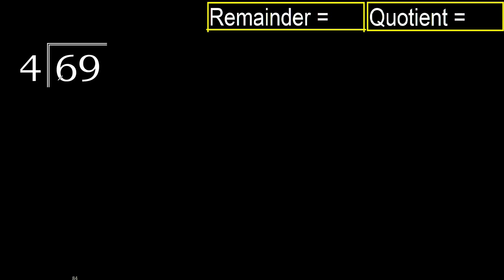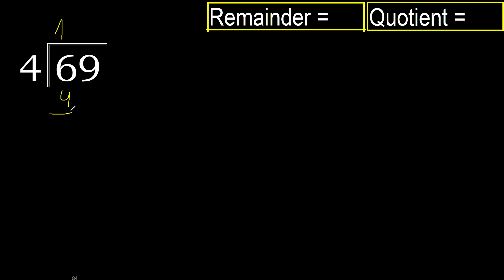69 divided by 4. 6 is not less, therefore work with 6. 4 multiplied by which number is nearest to 6 but not greater? 4 multiplied by 2 is 8 — 8 is greater. 4 multiplied by 1 is 4 — is not greater. 6 minus 4 is 2. Next: 29.